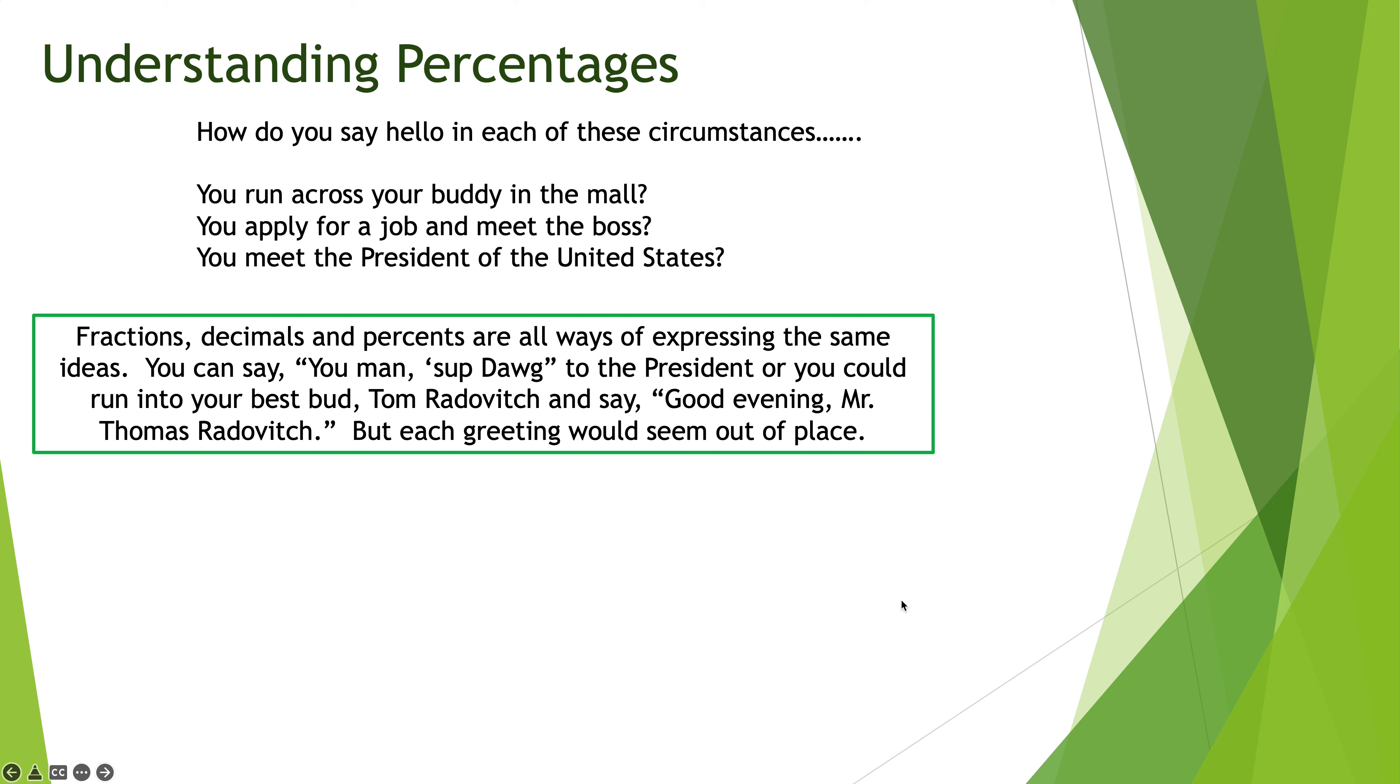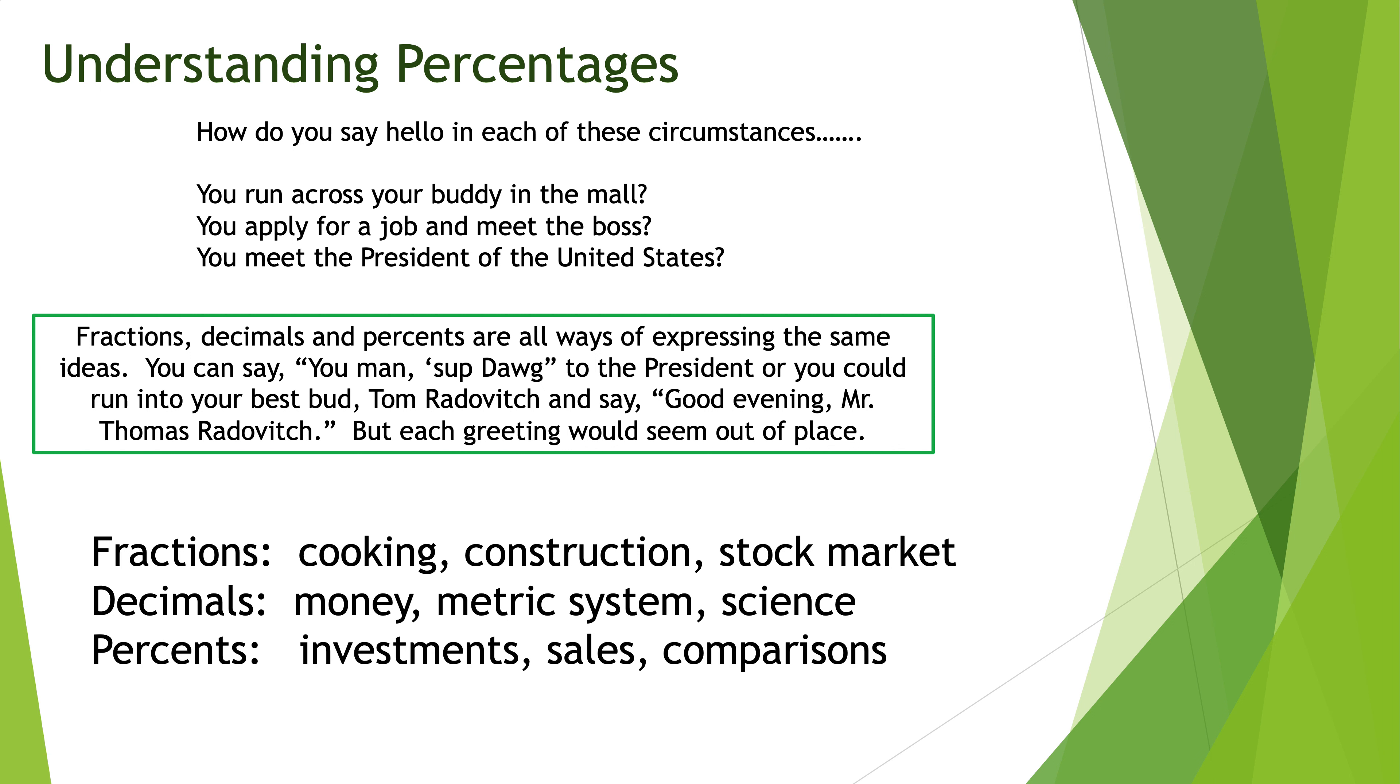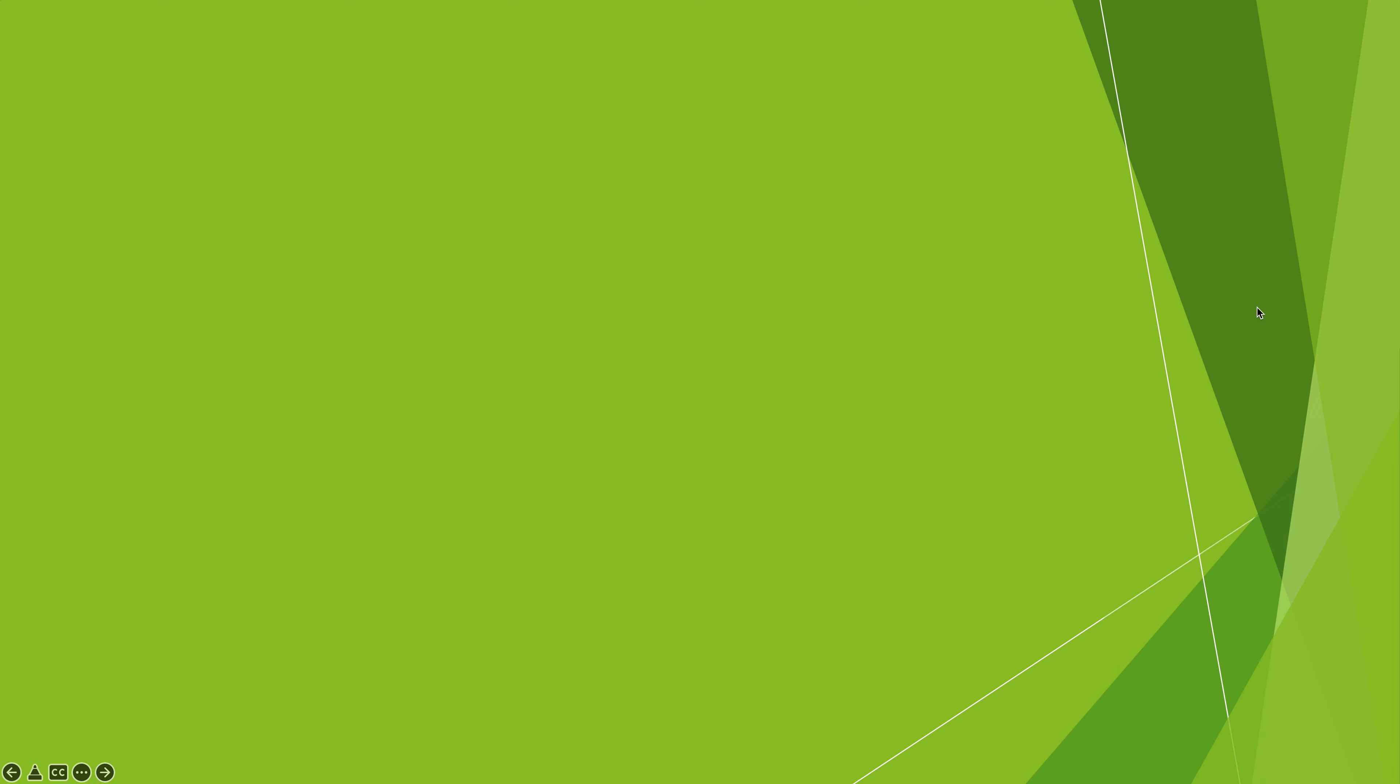There's fractions, decimals, and percents. And there's a time and a place for fractions, a time and a place for decimals, a time and a place for percents. Fractions are typically used with cooking, with construction, with the stock market. Decimals are typically used with money, the metric system, science as a whole. And percents - investments, sales, comparisons, things like that. So we have to be on top of it and understand each of these different applications. Today we're going to focus mostly on the percent applications.